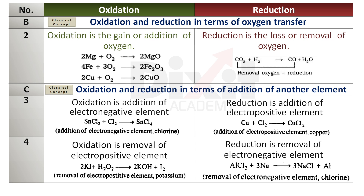Point number 4: Oxidation is the removal of an electropositive element. Example: potassium iodide reacts with hydrogen peroxide to form potassium hydroxide and iodine. In this reaction, electropositive element potassium is removed from potassium iodide. Reduction is the removal of an electronegative element. Example: the reaction between aluminium chloride and sodium is a single replacement reaction. In this reaction, sodium replaces aluminium, forming sodium chloride and elemental aluminium. Electronegative element chlorine is removed from aluminium chloride.